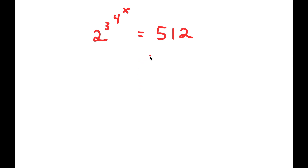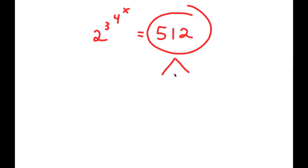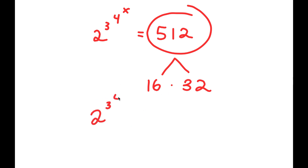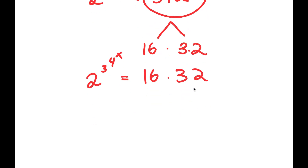To solve this, I'm going to first start by rewriting 512. So 512 is the same thing as 16 times 32. Now 16 is equal to 2 to the power of 4, and 32 is equal to 2 to the power of 5.